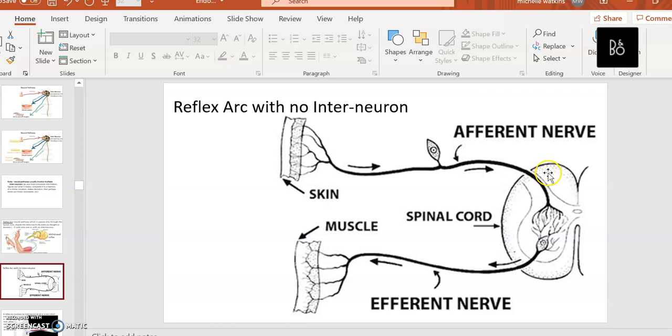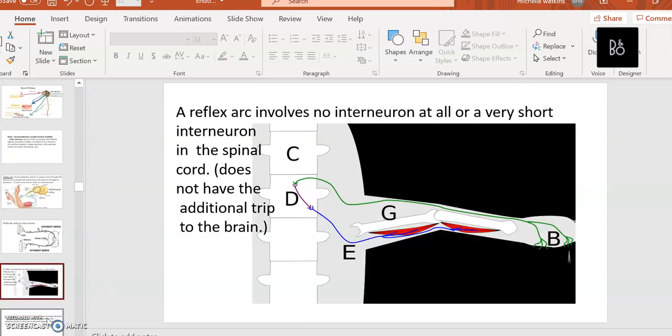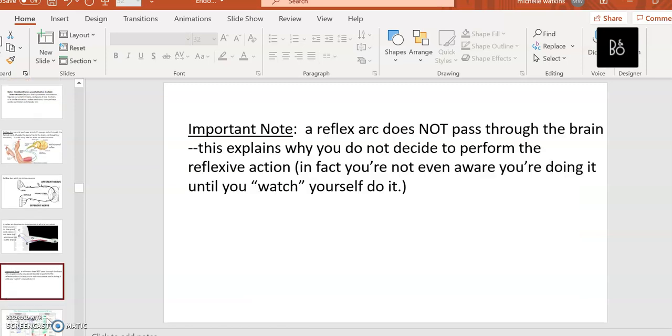This is a picture of the same thing - this is supposed to be skin, so afferent or sensory nerve, and this is the efferent or motor nerve. If you look carefully there's no interneuron here, so it's a reflex arc without an interneuron, and those do exist to save even more time. This doesn't go through the brain, that's why you don't decide, and sometimes you don't even notice what you're doing until you've already done it with a reflex.